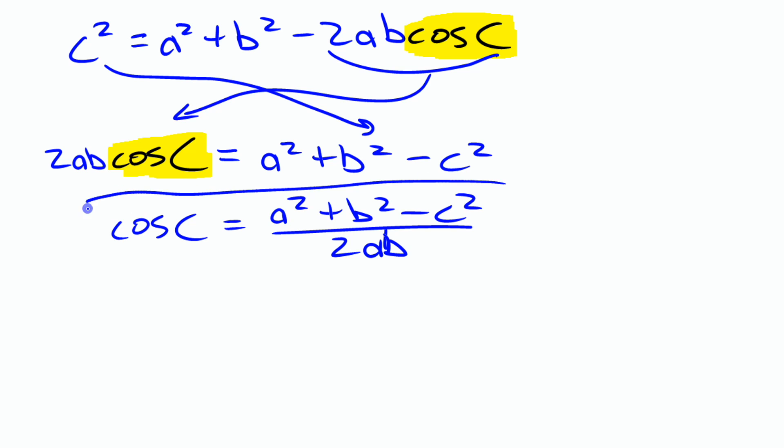Sometimes you see that formula written for finding the angle, and then you know that that'll give you what cosine of C is, and you can use the inverse cosine function to find the angle, just like we did before. Or sometimes you see it written like this, where it actually says that it's cosine inverse of all of that stuff.